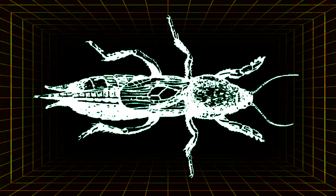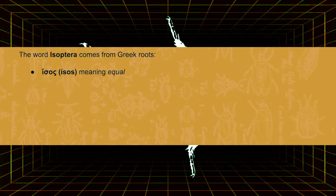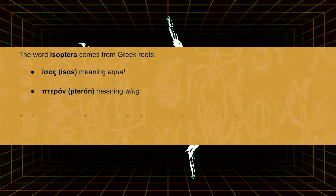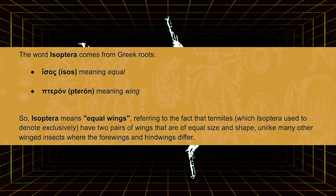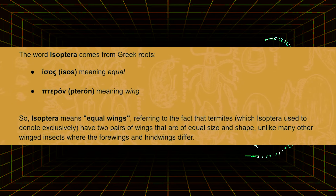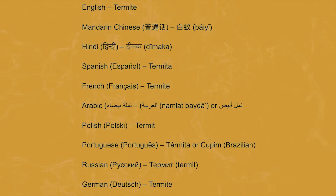The name Isoptera comes from the Greek roots isos, meaning equal, and terra, meaning wing. So Isoptera literally means equal wings, referring to the fact that termites have two pairs of wings that are of equal size and shape, unlike many other winged insects where the fore wings and hind wings differ.